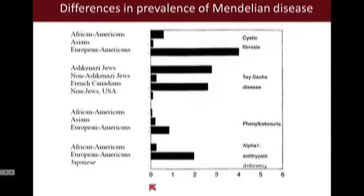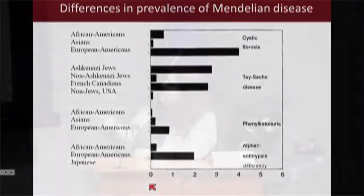For example, cystic fibrosis is very common in European-Americans, Tay-Sachs disease in Ashkenazi Jews, and phenylketonuria in African-Americans.